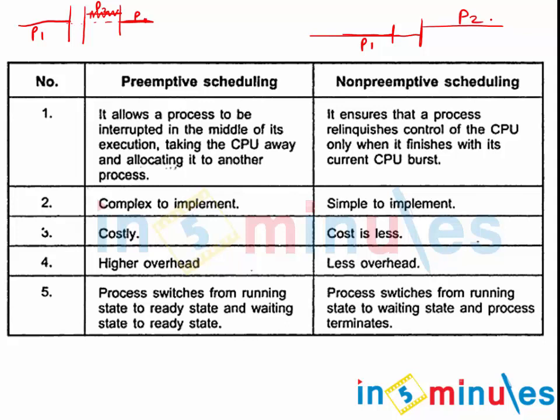Let's look at the key differences. Preemptive scheduling allows a process to be interrupted in the middle of execution, taking the CPU away and allocating it to another process. Non-preemptive scheduling ensures that a process releases control of the CPU only when it finishes. Preemptive scheduling is very complex to build because something can start in between unexpectedly.